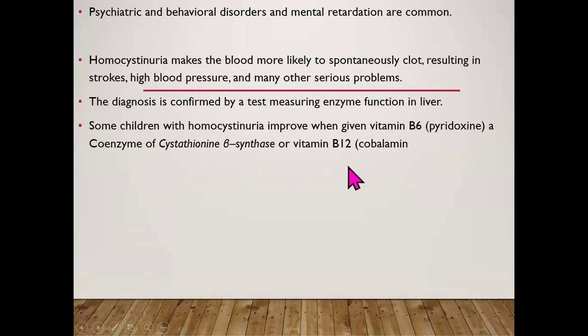Homocystinuria makes the blood more likely to spontaneously clot, resulting in stroke, high blood pressure, and other serious problems. Diagnosis is confirmed by a test measuring enzyme function in the liver. Some children improve when given vitamin B6 (pyridoxine) — the coenzyme of cystathionine beta-synthase — or vitamin B12 (cobalamin).